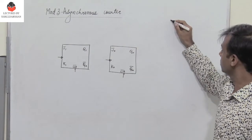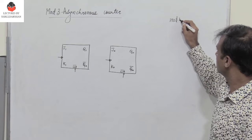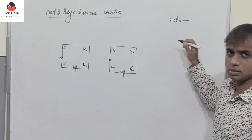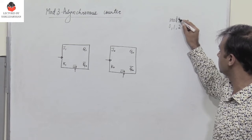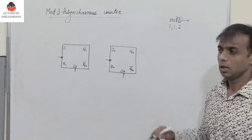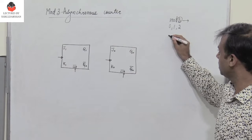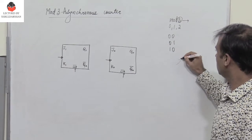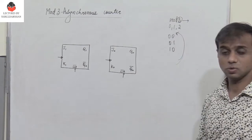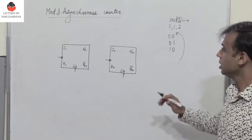When we talk about mod 3, it means there are only three states: 0, 1, and 2, which is one less than the mod value. If I represent them in binary, I have 00, 01, 10, and then it comes back to state 00.